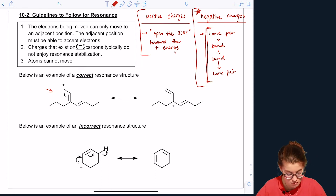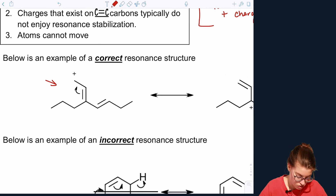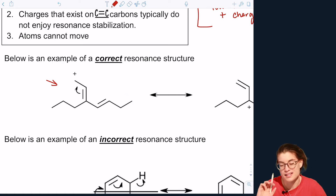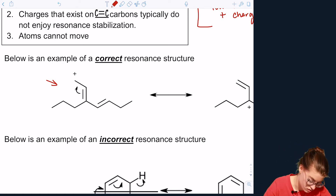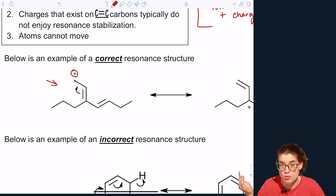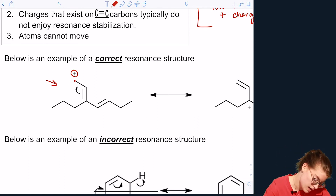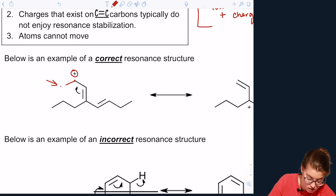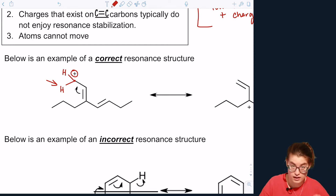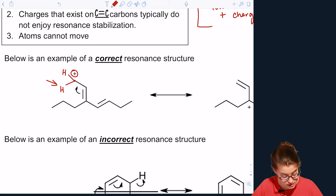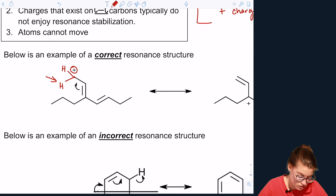Below is an example of a correct resonance structure. First, we need to remember the invisible hydrogens. If this carbon has a positive charge, it means it only has two other bonds that aren't drawn, which implies they are hydrogens. So there are two invisible hydrogens here — and that's what causes this carbon to have a positive formal charge.